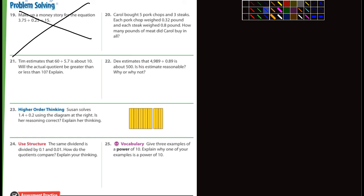Number 21. Tim estimates that 60 divided by 5.7 is about 10. Will the actual quotient, that's the answer to the division problem, be greater or less than 10? Explain. Greater, because 5.7 is less than 6.